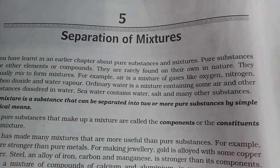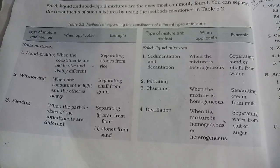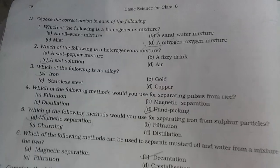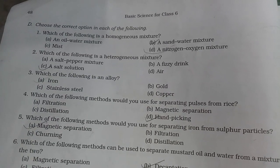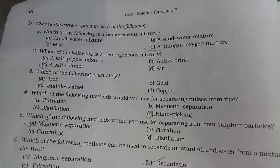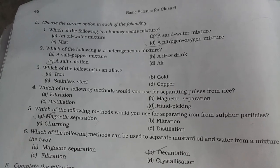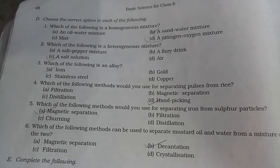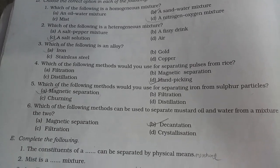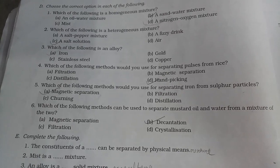Chapter 5: Separation of Mixtures. Which of the following is a homogeneous mixture? A nitrogen-oxygen mixture. Which of the following is a heterogeneous mixture? Sand and water. Which of the following is an alloy? Stainless steel. Which method is used for separating pulse from rice? Winnowing. Which method will separate sulfur particles? Magnetic separation.